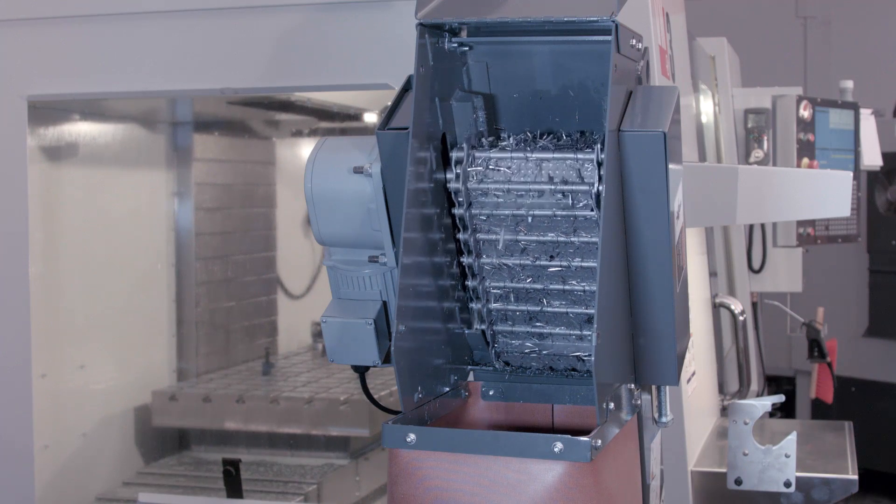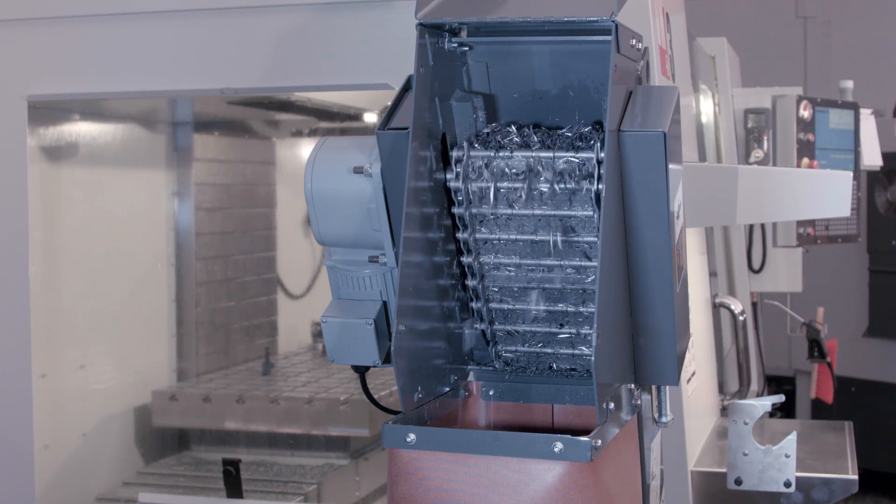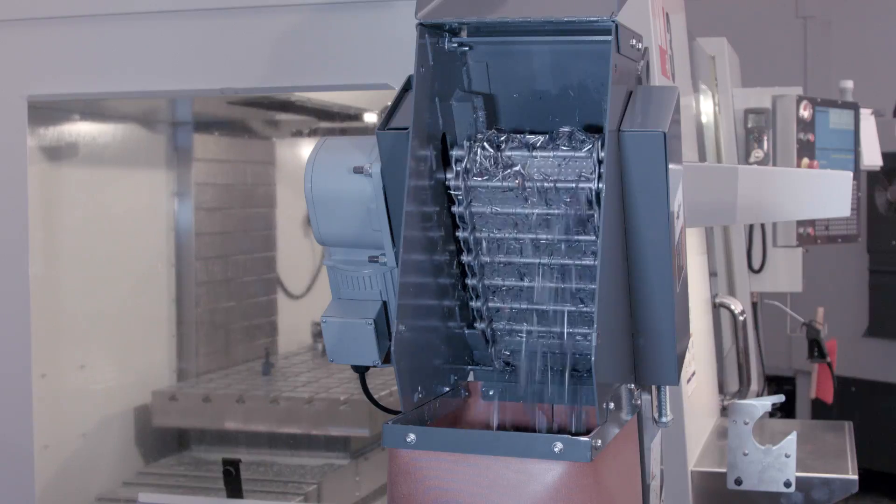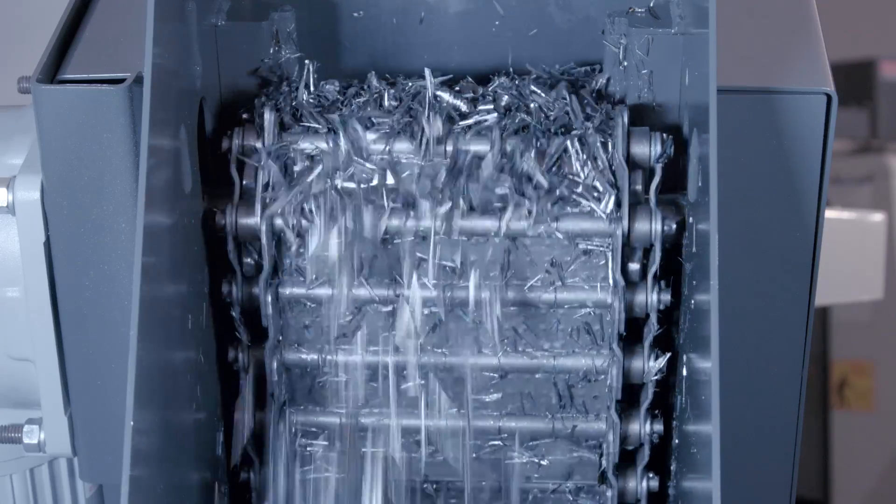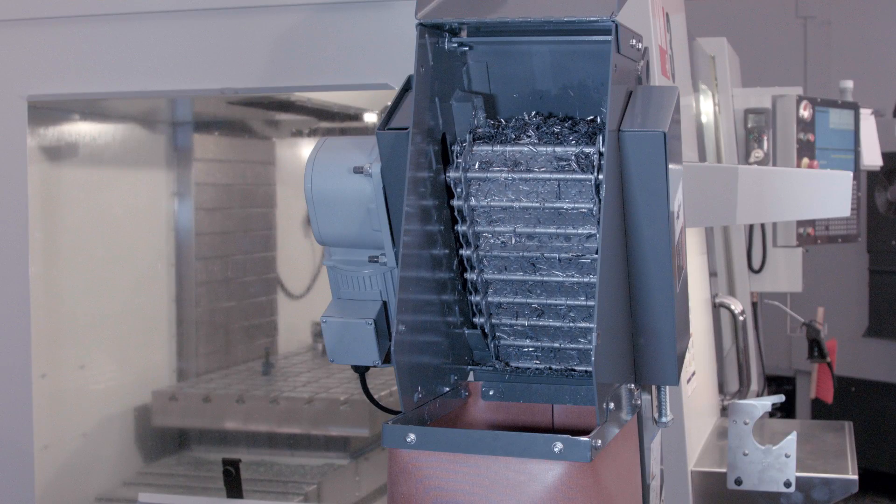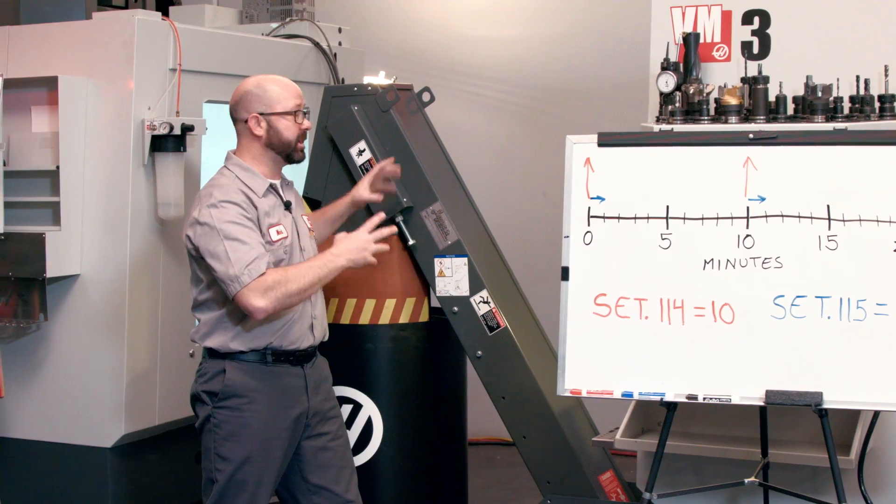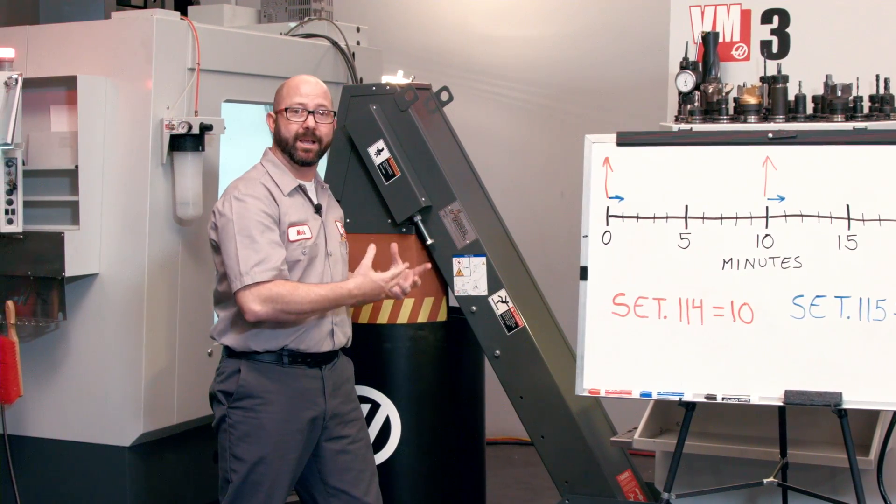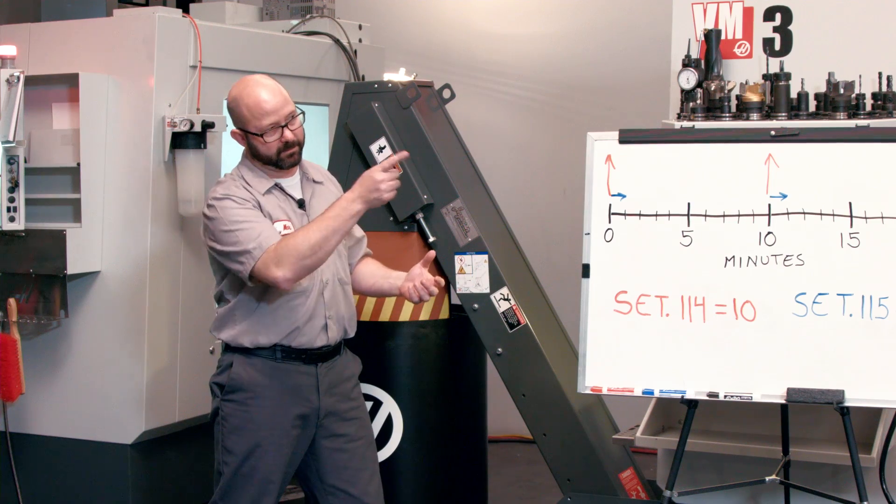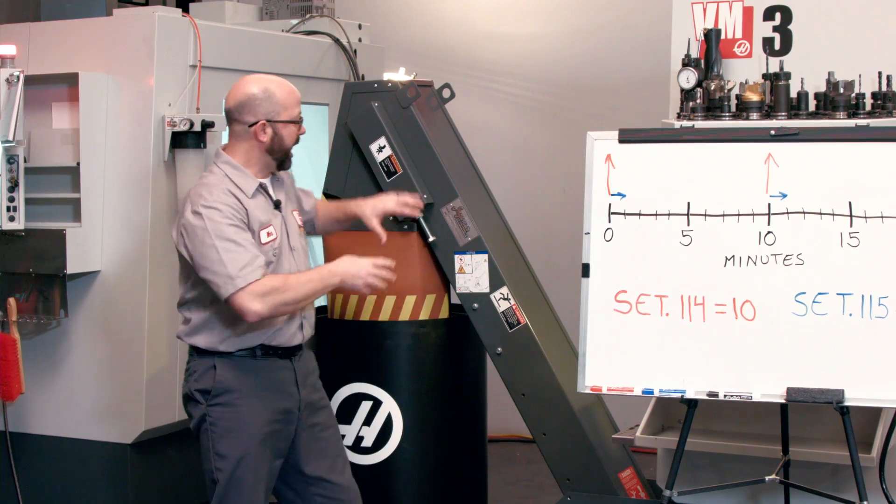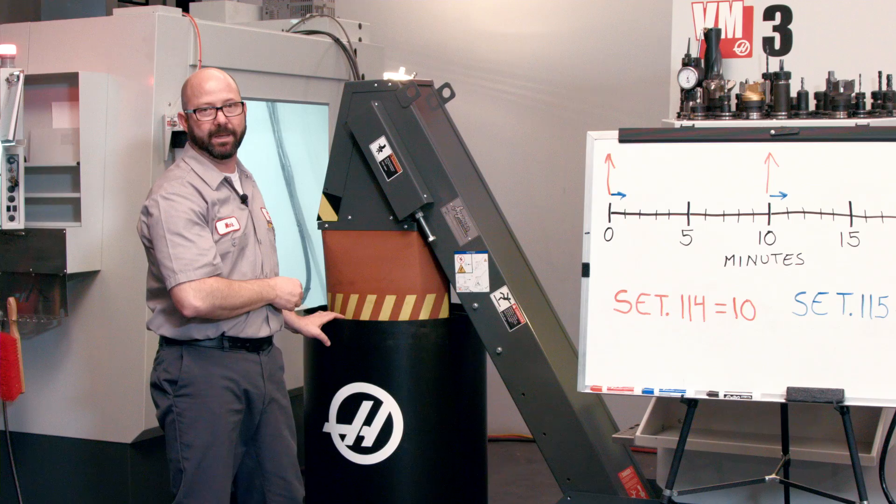Every 10 minutes, our conveyor is going to turn on and our chips are going to work their way up this conveyor chute, this up chute right here. And then, the conveyor is going to stop just leaving our chips hanging out inside this up chute. And so, for the next nine minutes, those chips are going to be draining of their coolant until they're just about completely dry. And then, what happens? Our conveyor kicks on again and drops those now dry chips into our chip bin.